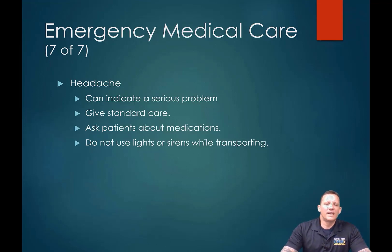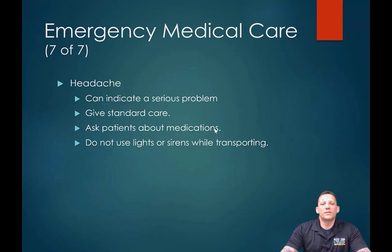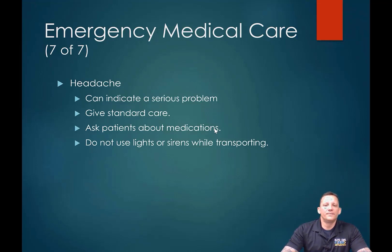For headaches, determine: is this a run-of-the-mill tension headache from stress or dehydration, or is this a migraine so significant it's causing vomiting or auditory or visual hallucinations? Those people are at risk for hemorrhagic stroke. That's all we have for neurological emergencies. Follow your altered mentation algorithm — I've probably said it 25 times in this lecture, but it is a core fundamental to understanding why somebody would be obtunded or unresponsive.